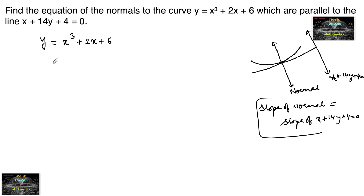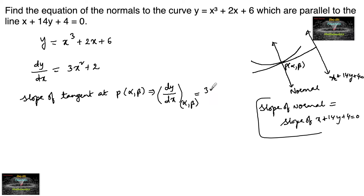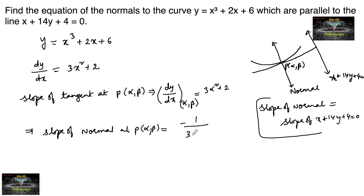Now let's differentiate to find the slope of the tangent. dy/dx = 3x² + 2. The slope of the tangent at a point P(α, β) on the curve is dy/dx at (α, β) = 3α² + 2. This implies the slope of the normal at point P(α, β) is −1 / (3α² + 2), because slope of normal = −1 / slope of tangent.